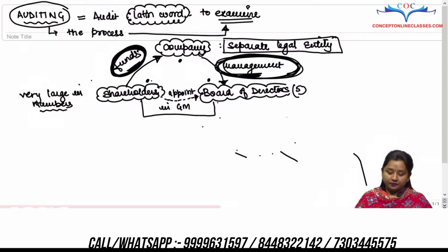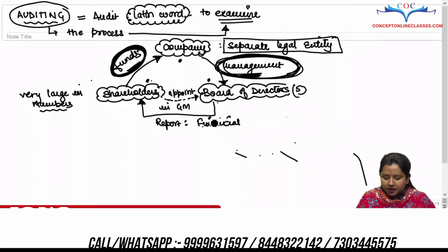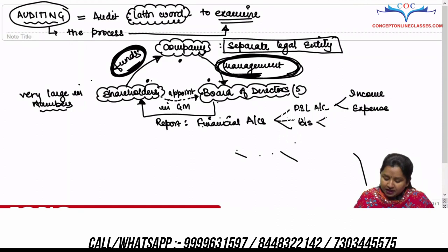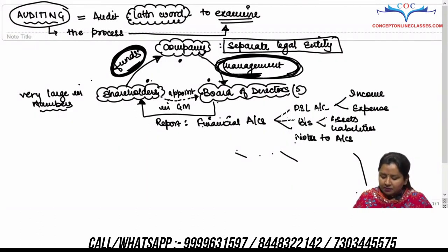Shareholders ask directors for an account of their money, and directors report to shareholders about all these expenditures in financial accounts. Every year financial accounts are created — the company prepares a profit and loss account showing income and expenses, then a balance sheet showing assets and liabilities, and time-to-time notes to accounts covering contingent liabilities, contingent assets, cash flow statements, and so on.